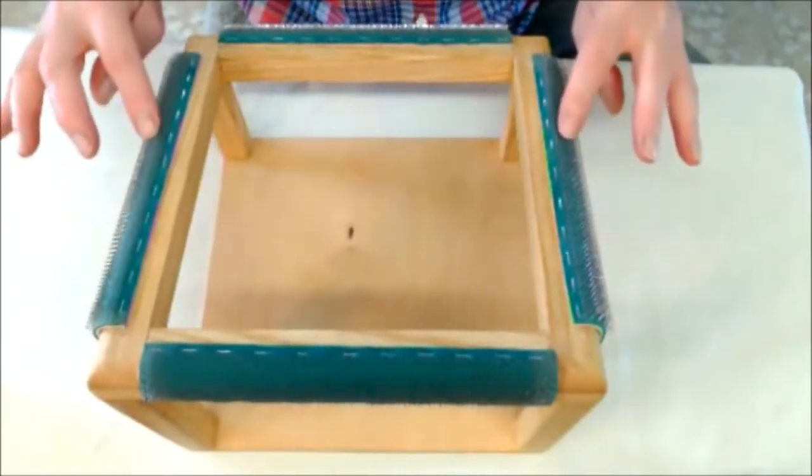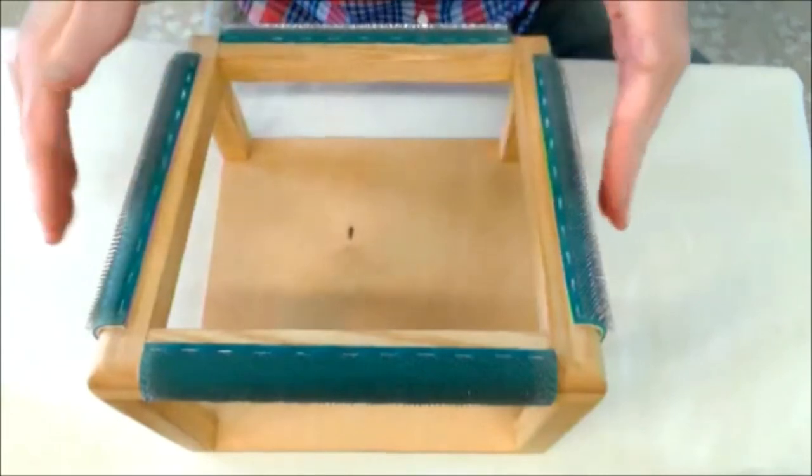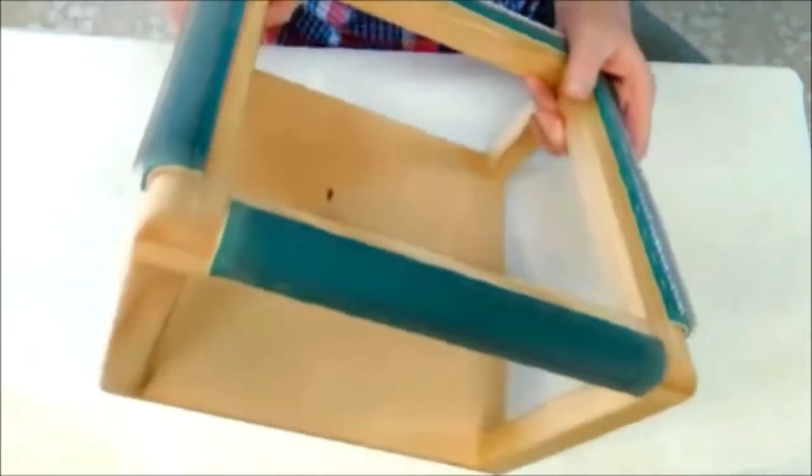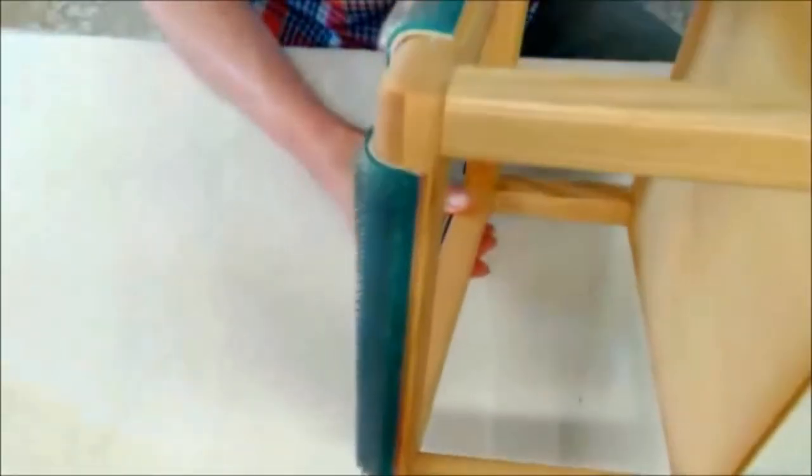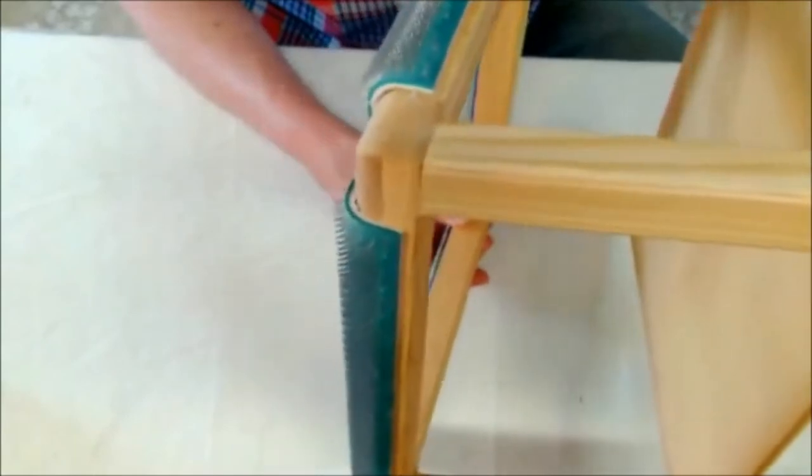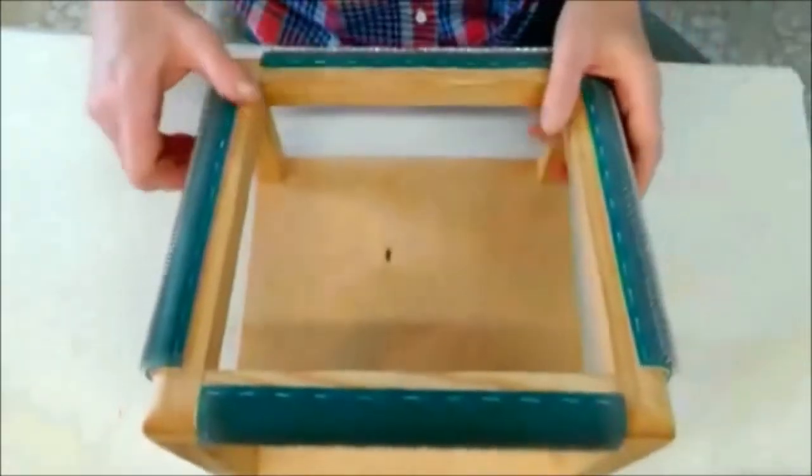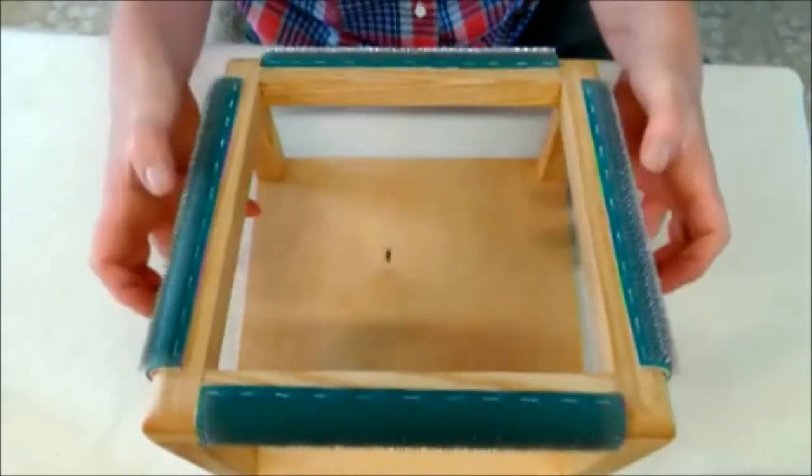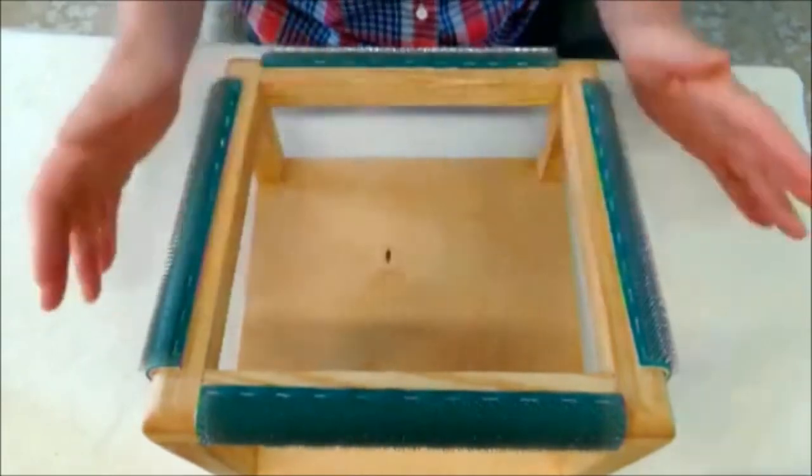These are Howard Brush gripper strips. They have teeth that point out and down. Let's see if I can get a decent picture. The teeth point out and down, and when you pull your fabric, the teeth grip it and keeps it taut on top.